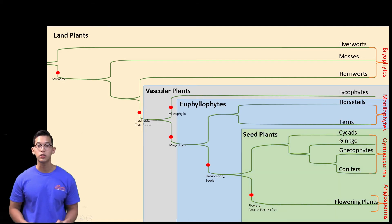Our seed plants include our gymnosperms and our angiosperms, and their synapomorphies include seeds and secondary growth.